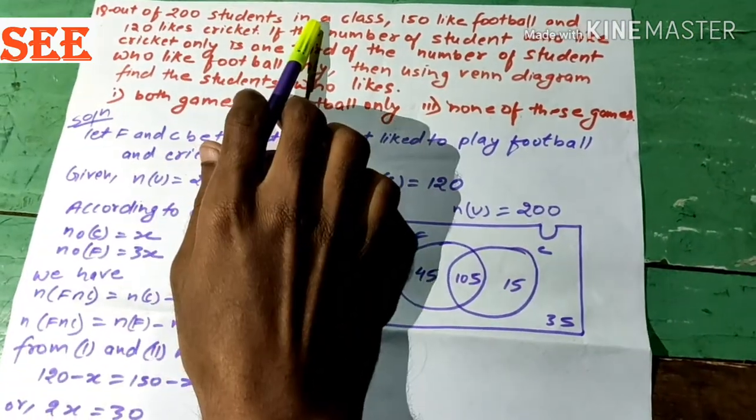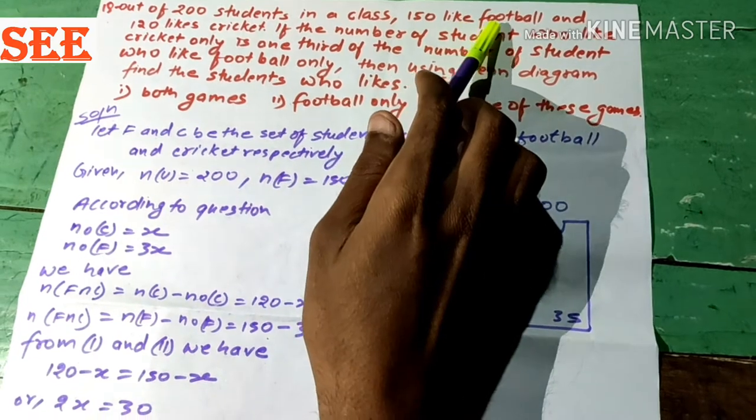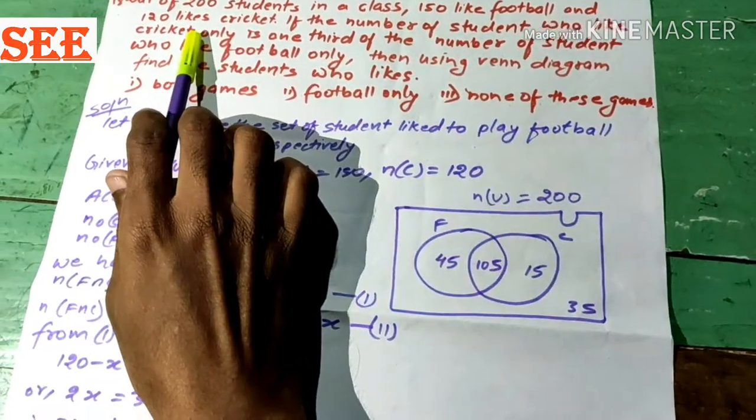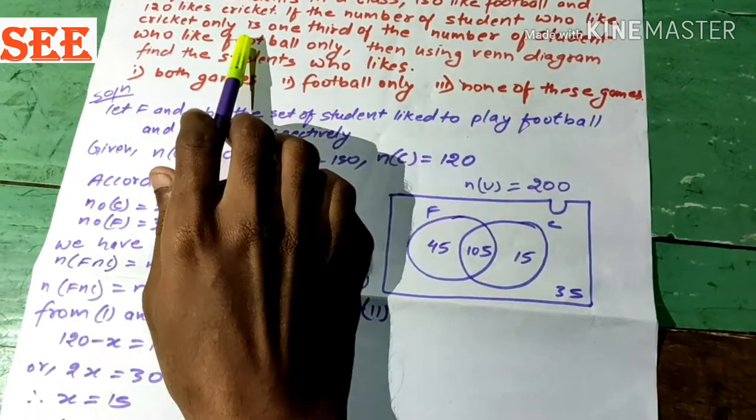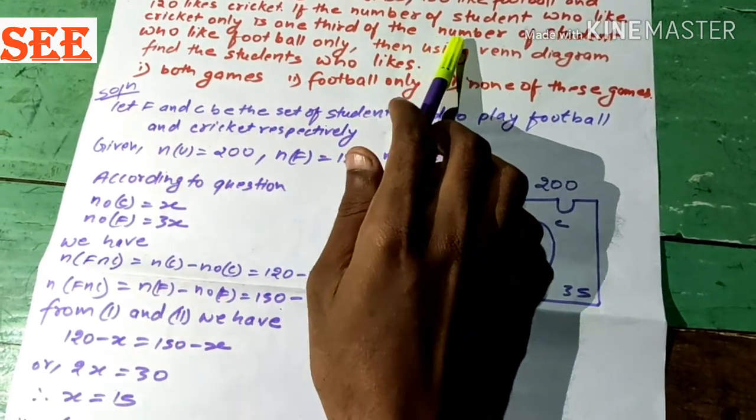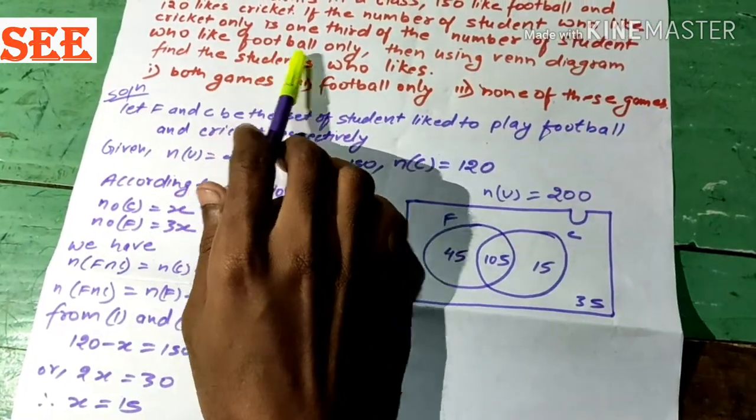Out of 200 students in a class, 150 students like football, 120 like cricket. If the number of students who like cricket only is one third of the number of students who like football only.